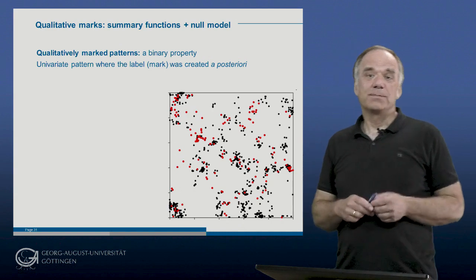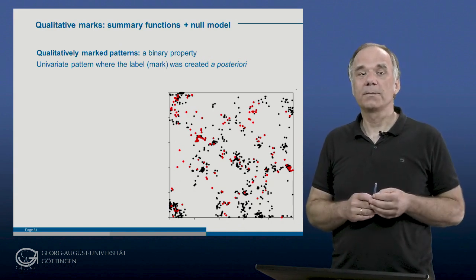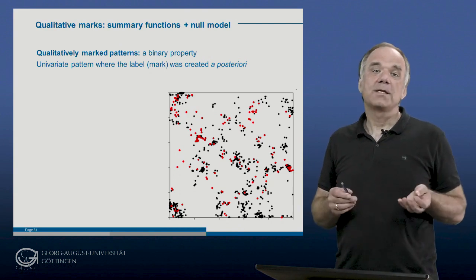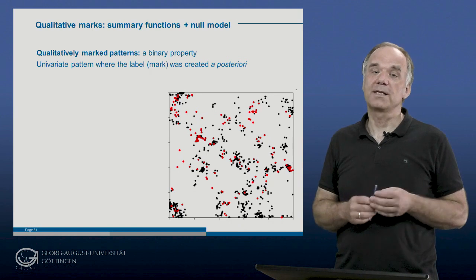In the last overhead, I explained the data structure and typical questions for qualitatively marked point patterns. Now our task is to develop suitable summary functions and null models for this data structure.